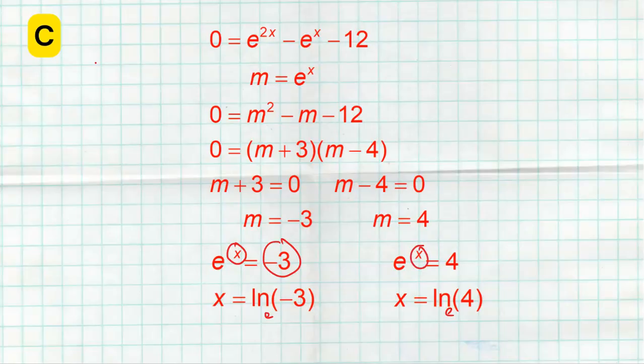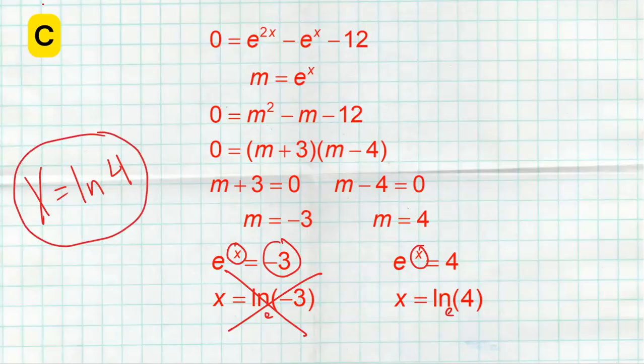But there's one more part left of this problem. You're never allowed to have negatives inside of logs. That's undefined. They don't work. You can't have a negative in a log. It's not in the domain. So this answer of natural log of negative 3 is not an answer. It doesn't work. It's not in the domain. So the only answer for x is the natural log of 4.